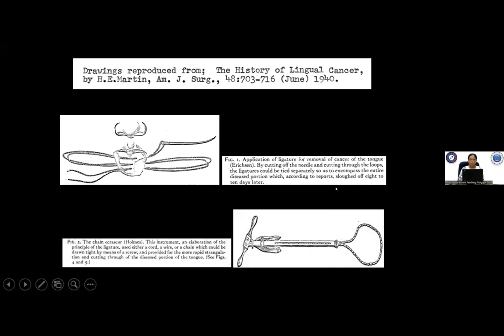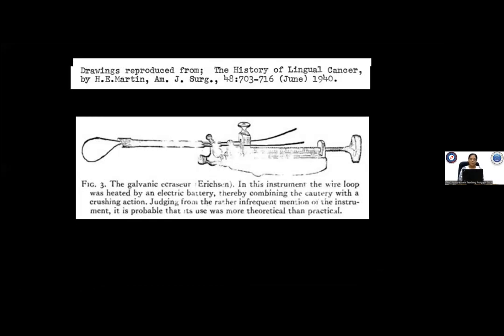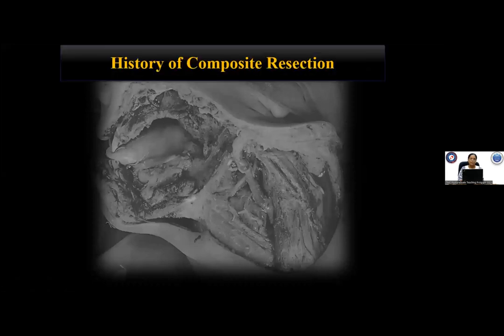Then there was the use of a chain-like instrument with which the tumor was strangulated, followed by the use of the first cautery called galvanic abrasion. This had a crushing wire-like loop in the front and a battery inside through which heat could be transmitted, and with the crushing effect and heat, tumors of the tongue were excised. This was followed by the era of composite resections mainly for mandible cancers.